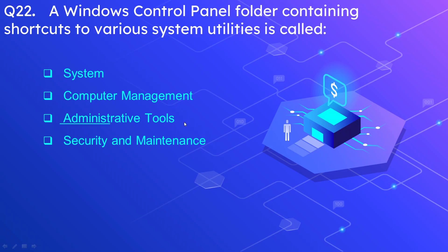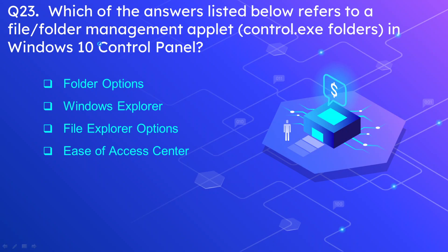Question number 23: Which of the answers listed below refers to a file and folder management applet (control.exe folders) in Windows 10 control panel? The options are Folder Options, Windows Explorer, File Explorer Options, and Ease of Access Center. The correct option is File Explorer Options.